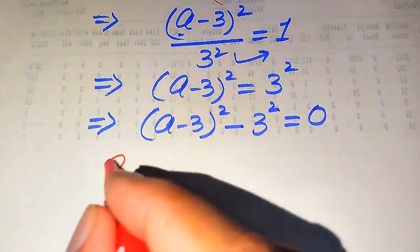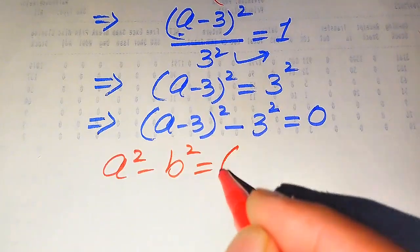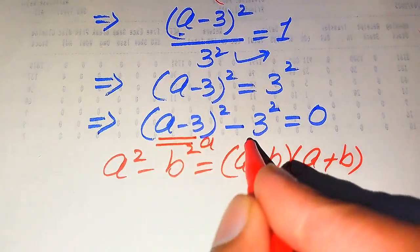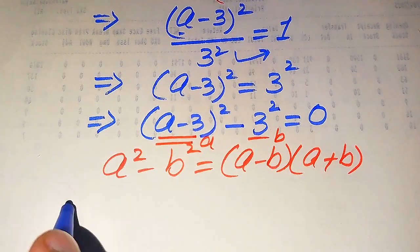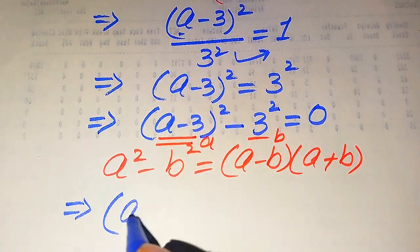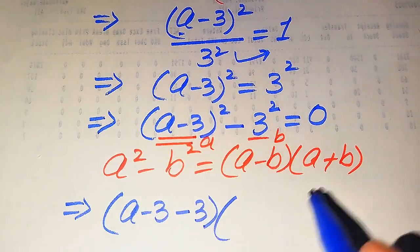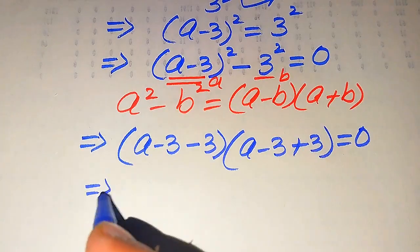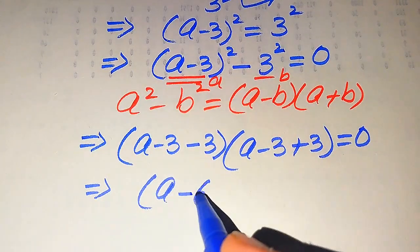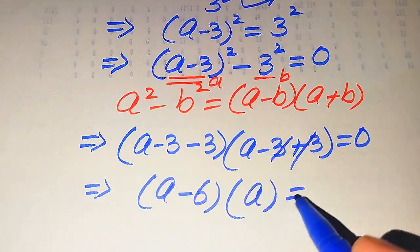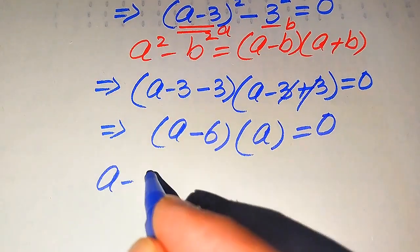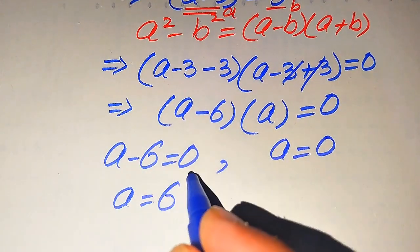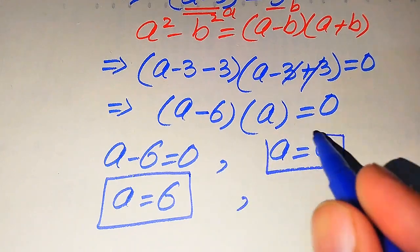We apply the algebraic identity a squared minus b squared equals (a minus b)(a plus b). Here a is (a minus 3) and b is 3, so the equation becomes (a minus 3 minus 3)(a minus 3 plus 3) equals 0, which simplifies to (a minus 6)(a) equals 0. This gives two cases: a minus 6 equals 0, so a equals 6; and a equals 0.